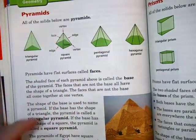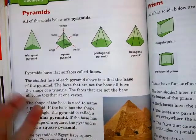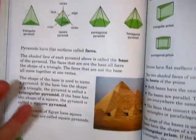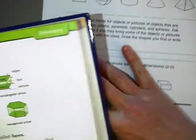The shape of the base is used to name the pyramid. If the base has a shape of a triangle, it's called a triangular pyramid. Shape of a square, square pyramid.